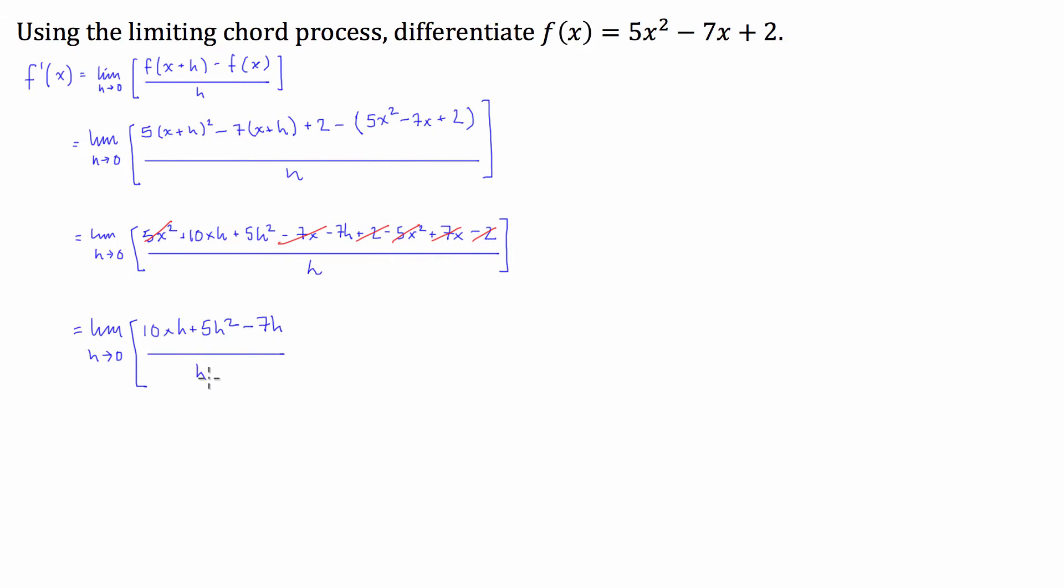So I'm left with the limit as h approaches 0 of 10xh plus 5h squared minus 7h, all divided by h, and then what we're going to do is we're going to factorize the numerator by h. So we have the limit as h approaches 0. Yes, it does get a bit tedious.